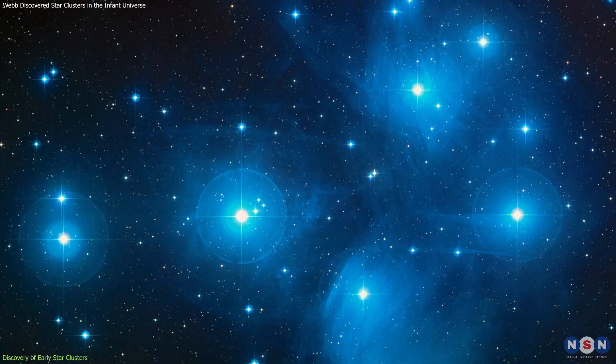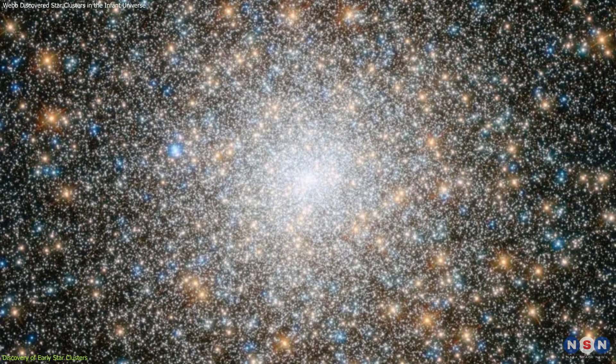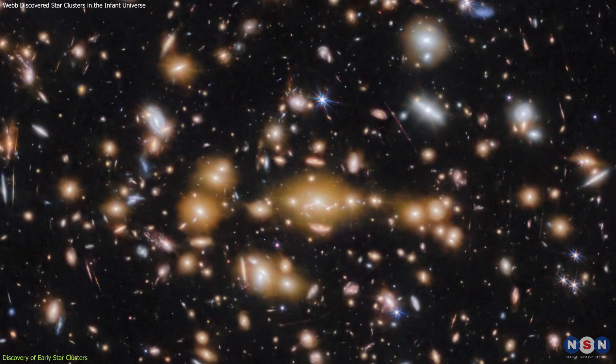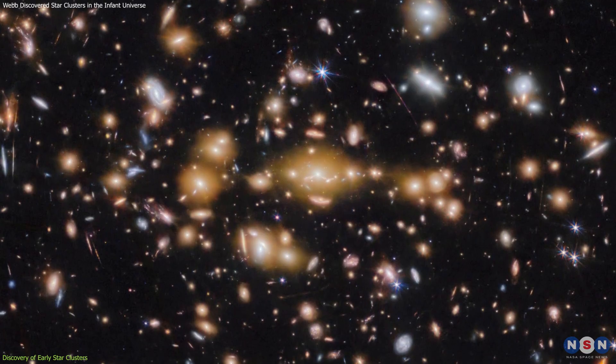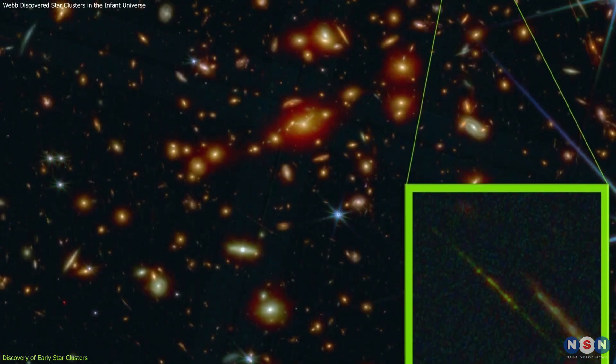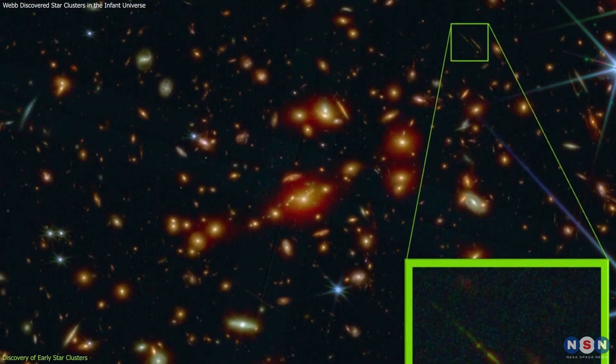Open clusters, which are loose groups of several hundred stars, and globular clusters, which are tightly packed groups of tens of thousands to hundreds of thousands of stars. The clusters observed by Webb in the Cosmic Gems Arc are thought to be ancestors of globular clusters, offering a rare glimpse into how such structures may have formed in the universe's earliest epochs.